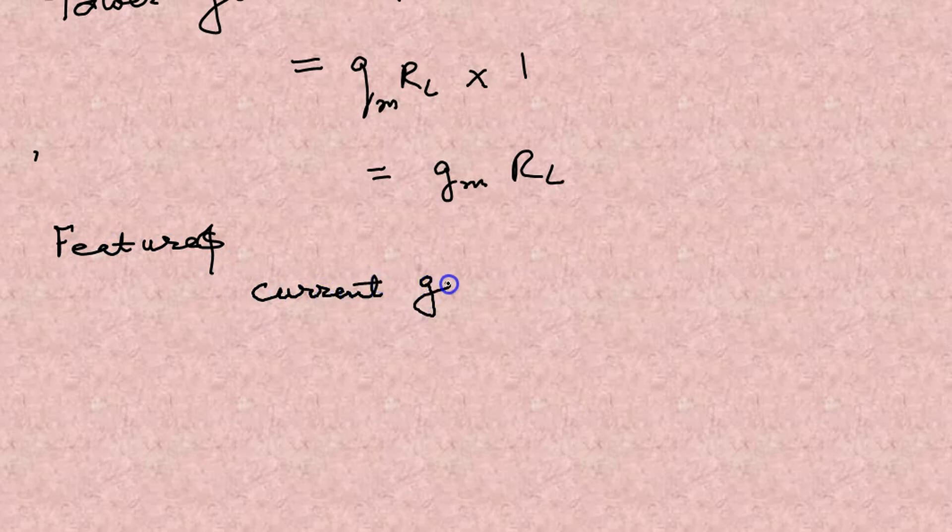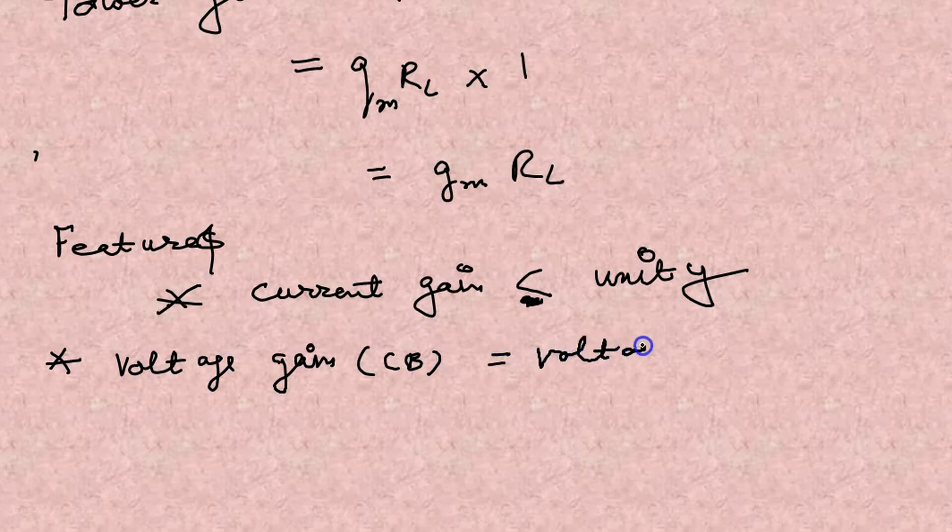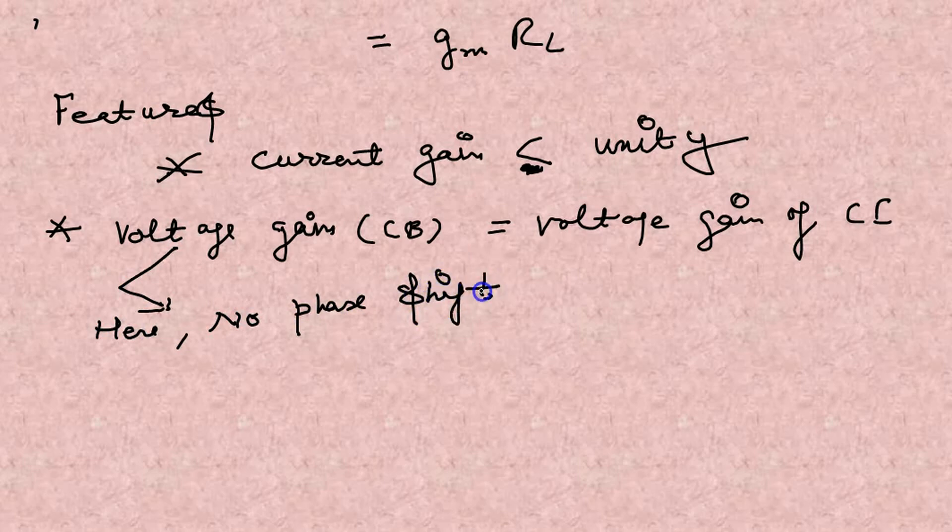Now features of the common base: number one, current gain is less than one. This is actually not a gain, actually it is a current loss because gain is always greater than one. Now voltage gain is same as that of the common emitter. Common base gain is same as common emitter but here there is no phase shift, this is the advantage. Output signal remains in phase with the input.